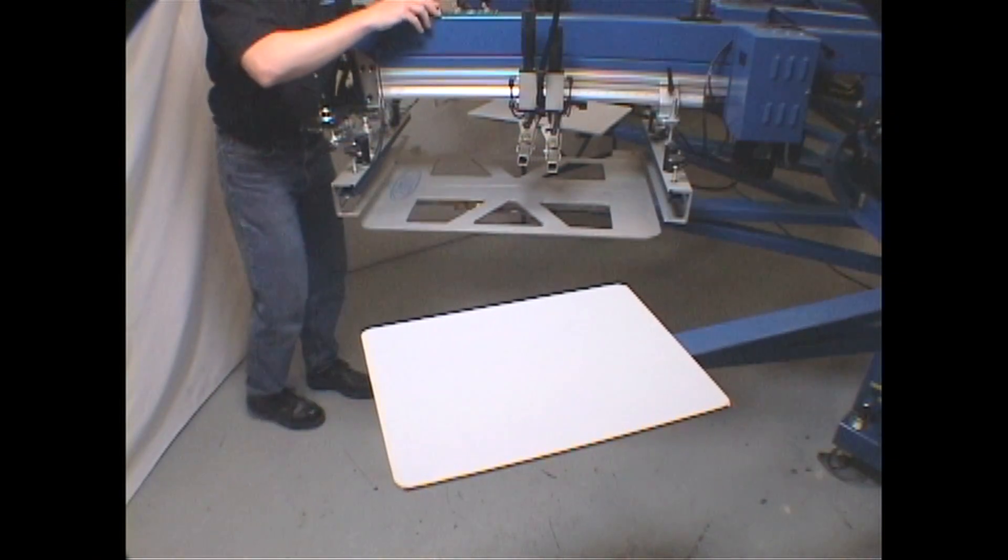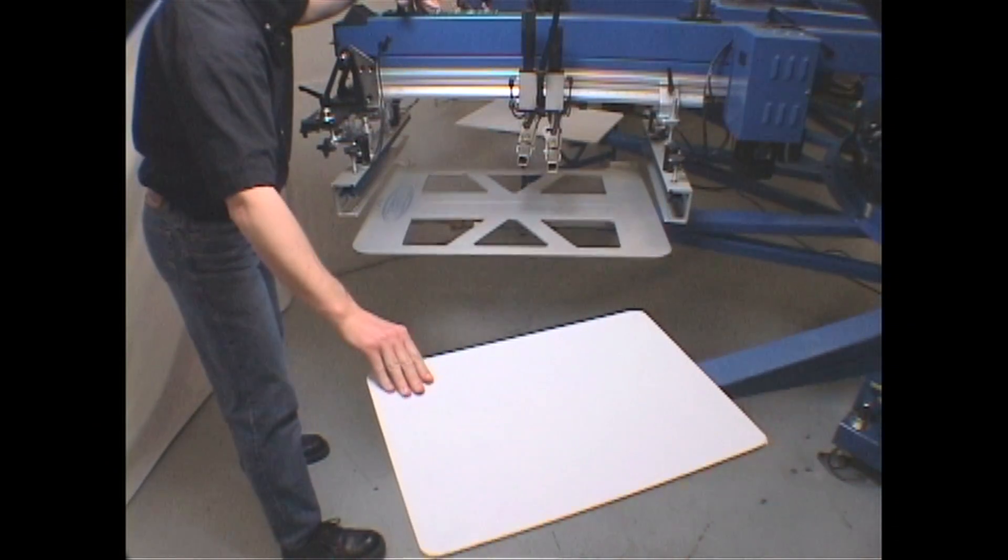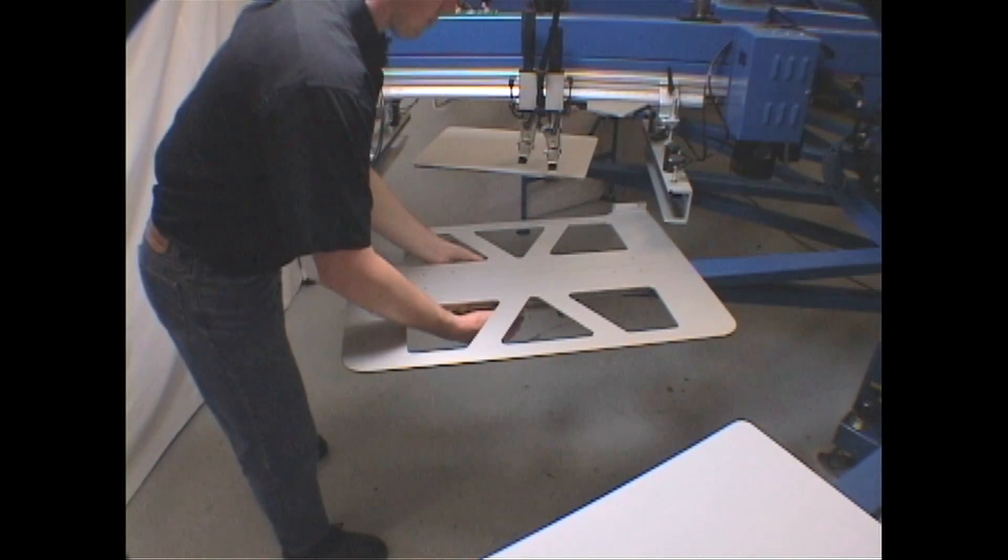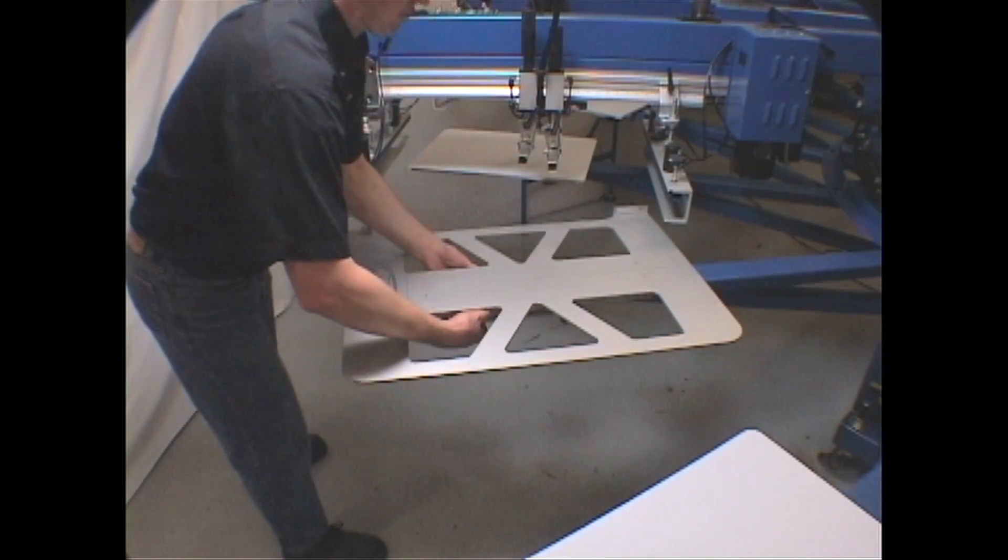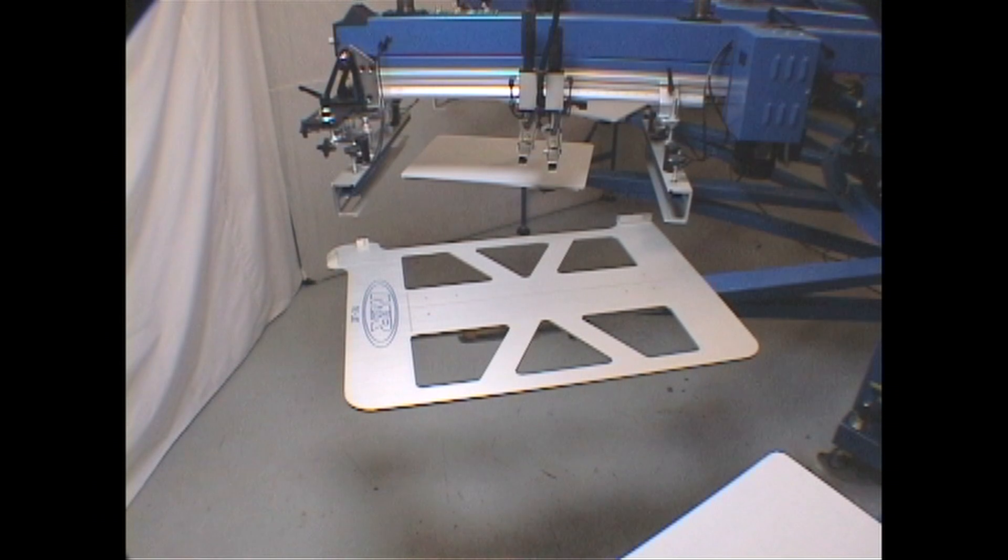Drop the lower carousel and manually index the pallet back to the open station. Lock the Tri-Lock pallet into position by tightening the yellow locking handle securely. Loose locks will allow the Tri-Lock pallet to shift, causing a loss of registration accuracy.